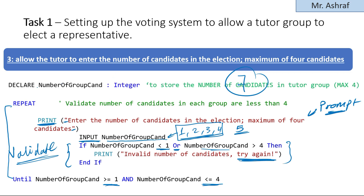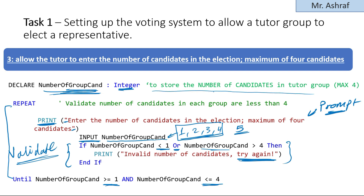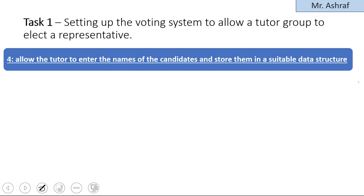Also, do not forget to declare this variable before using it — specify the data type and its purpose, which is to store the number of candidates in the tutor group, maximum of four. Now let's continue with point number four, which is to allow the tutor to enter the names of the candidates and store them in a suitable data structure.